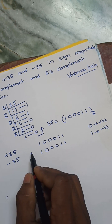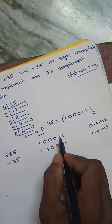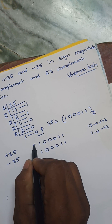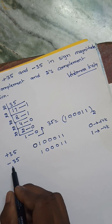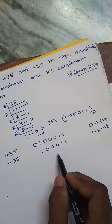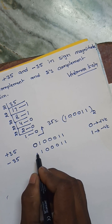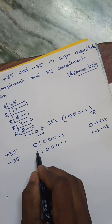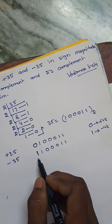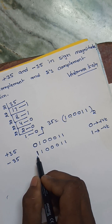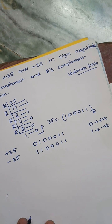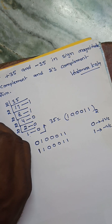Here plus 35 is there. How to represent plus 35? The binary form is there, but the plus sign is represented with 0. And minus 35 — how to represent minus 35? Before 35 we have to put 1. In sign-magnitude, 1 represents the negative sign. So this represents minus 35, and this represents plus 35.